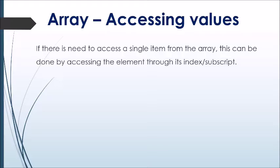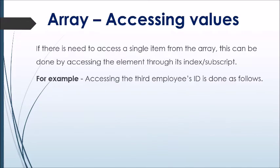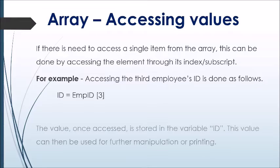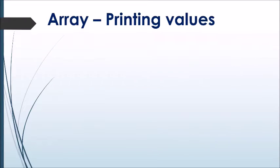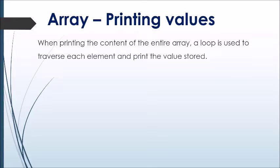Array accessing values: if there is a need to access a single item from the array, this can be done by accessing the element through its index or subscript. The example shows the accessing of the third employee's ID from the array 'empID' — the array name is followed by the index number enclosed in square brackets. Once accessed, the value is stored to the variable 'id' and can then be used for further manipulation or displayed as output.